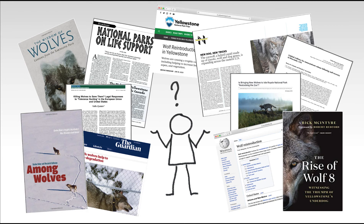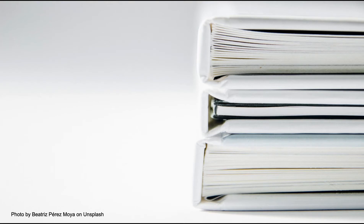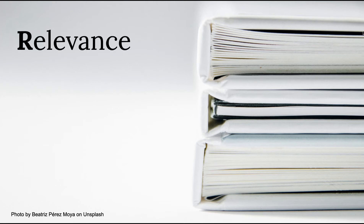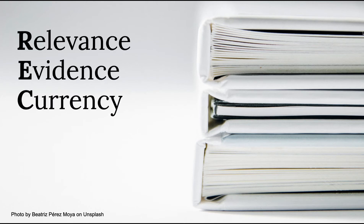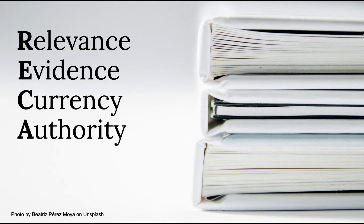So let's get started. When we evaluate sources, we should consider five main criteria: Relevance, Evidence, Currency, Authority, and Purpose. In this tutorial, we will look at how these criteria are applied to a scholarly article.